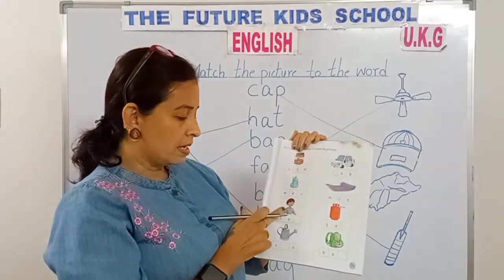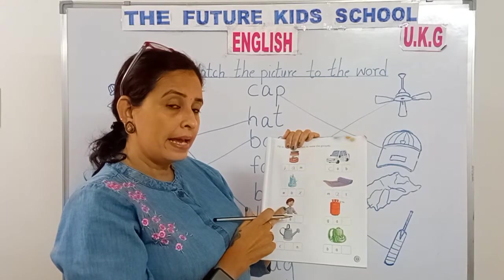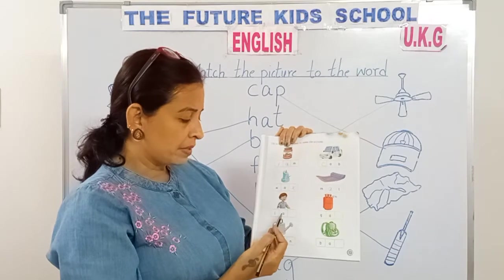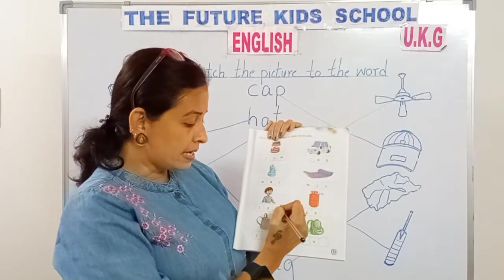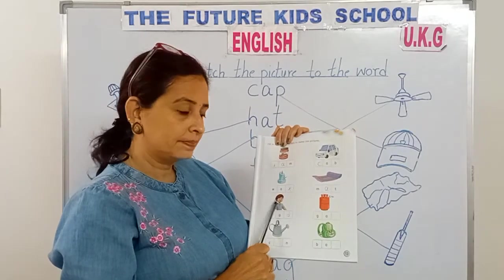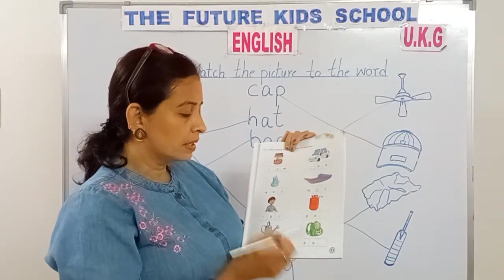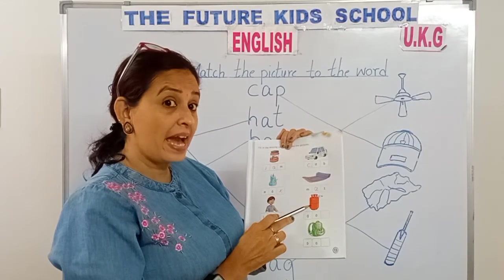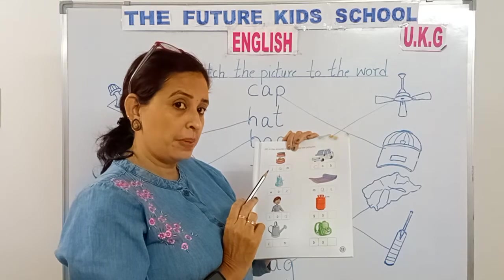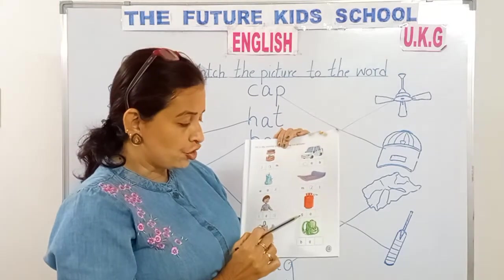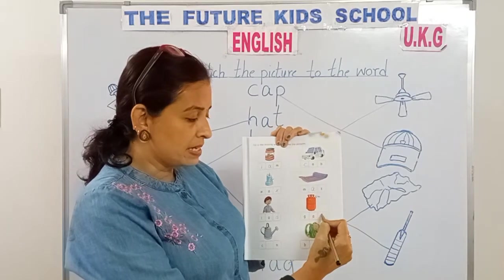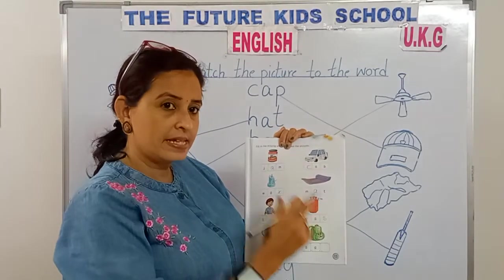This is a lad. L-A-D spells lad. L-A-D is the missing letter. Then this is a picture of gas. G-A-S spells gas. G-A-S is the missing letter. G-A-S.